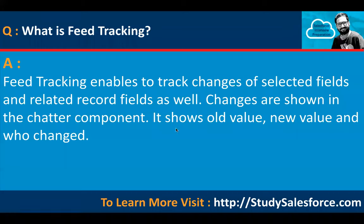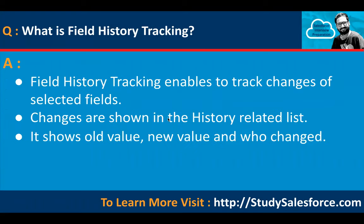What is feed tracking? Feed tracking enables tracking of changes to selected fields. Changes are shown in the history related list — it shows old value, new value, and who changed it. Similarly, what is field history tracking? Field history tracking also enables tracking of changes to selected fields, with changes shown in the history related list, showing old value, new value, and who changed it.